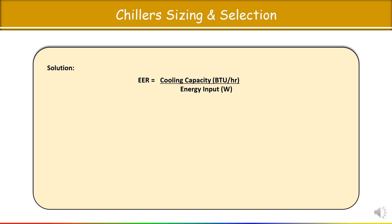To calculate EER — Energy Efficiency Ratio — the formula is: EER = Cooling Capacity (BTU/hr) ÷ Energy Input (Watts). Note the difference from COP: for EER, energy input must be in Watts, not BTU/hr. Substituting the values, you get EER = 18 BTU/hr per Watt. Greater the value of EER, better is that for the machine.